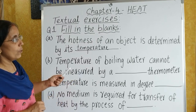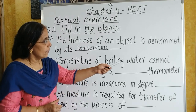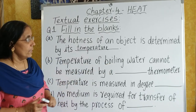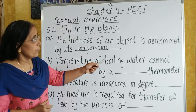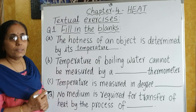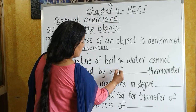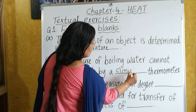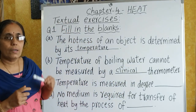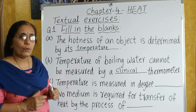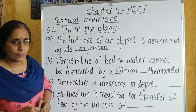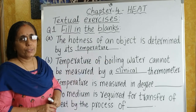Second one: temperature of boiling water cannot be measured by a dash thermometer. Here it is given 'cannot be measured,' so the answer is clinical thermometer. Because the temperature of boiling water can be measured only with a laboratory thermometer, but here it is given 'cannot be measured.'